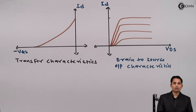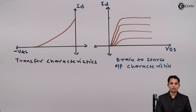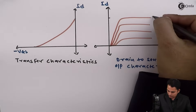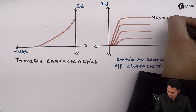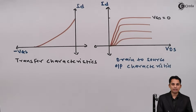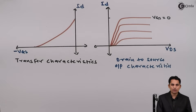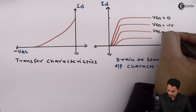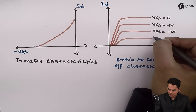In the output characteristics of JFET, the highest value of drain current is obtained when VGS is equal to zero. Similarly, as VGS becomes more and more negative, the value of drain current decreases.